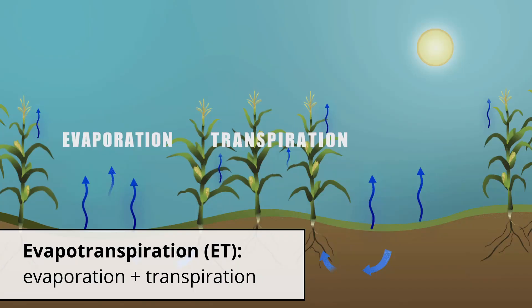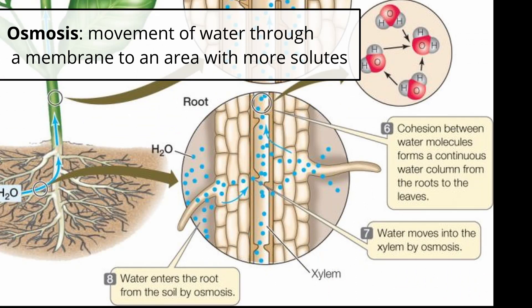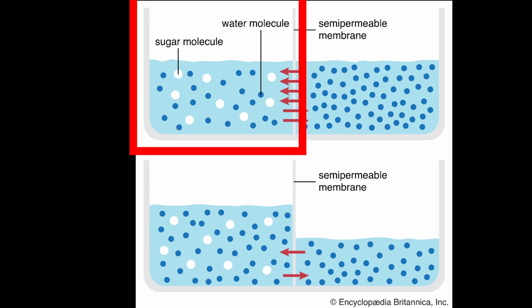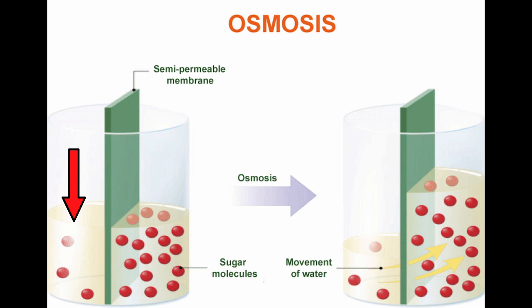When you hear people discuss plant water usage, you'll also run across the term evapotranspiration. This is a combination of water loss off of plants and from other surfaces like the soil or bodies of water. At the bottom of the plant, roots are absorbing water through osmosis, which describes a movement of water from an area with fewer dissolved substances called solutes, through a membrane, to an area with more dissolved solutes.